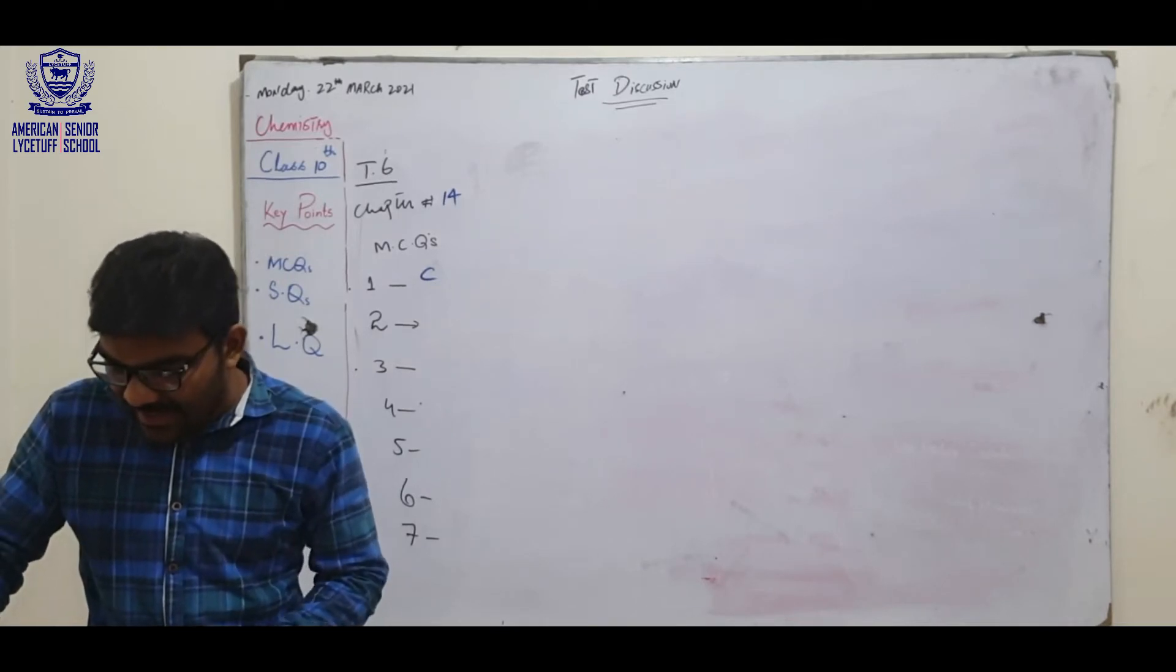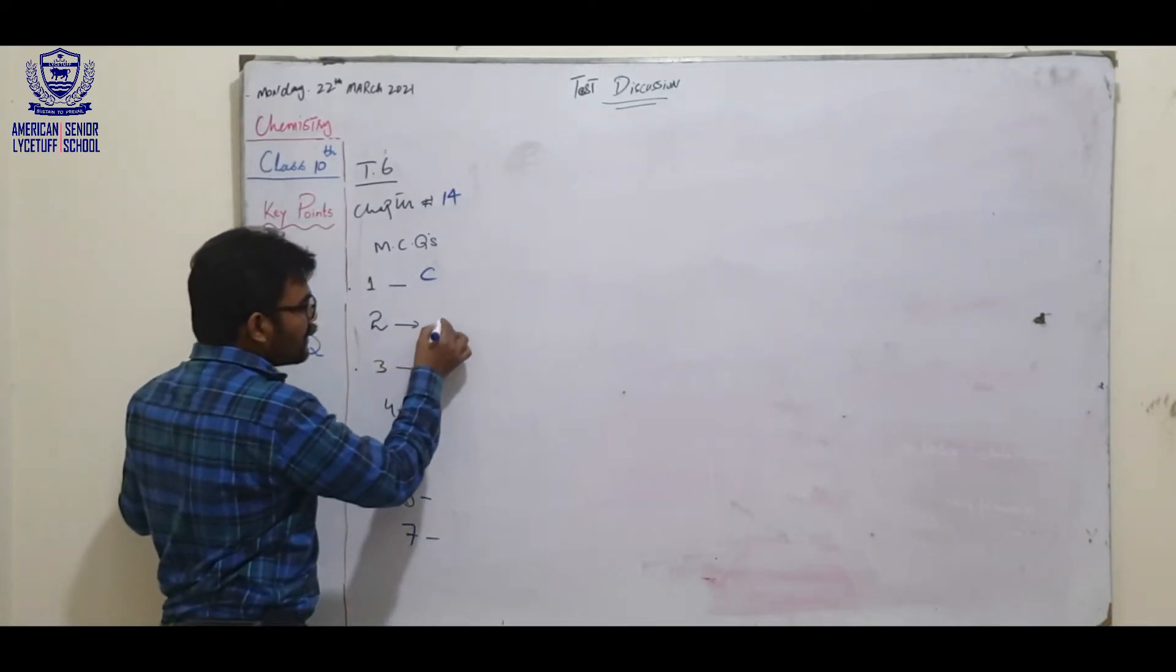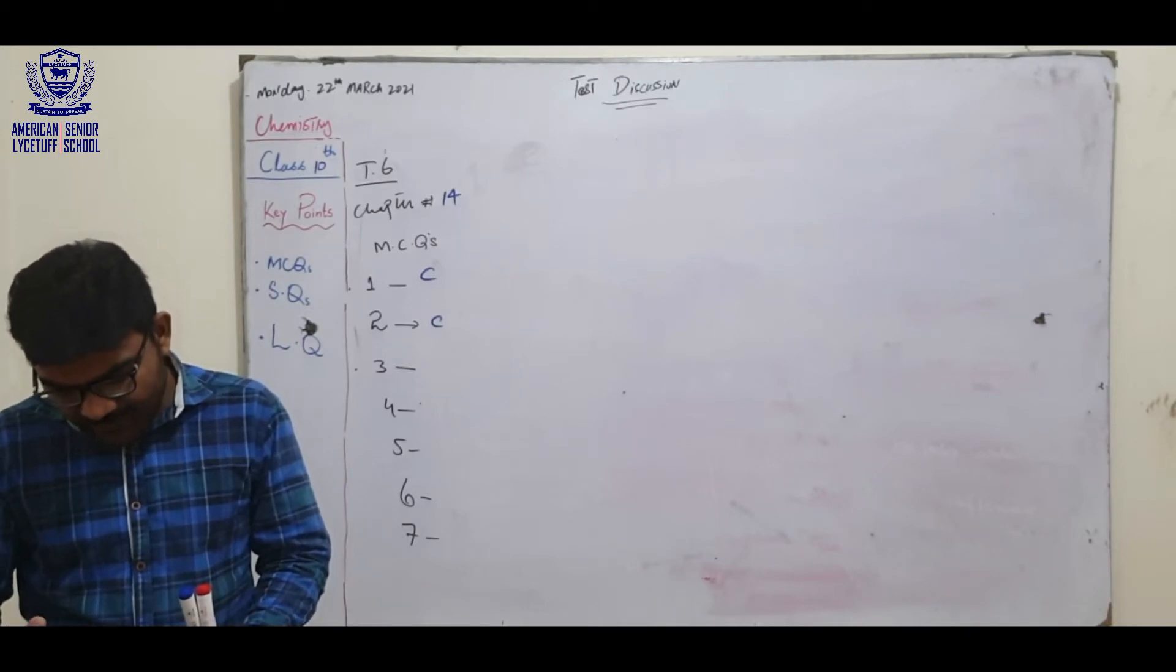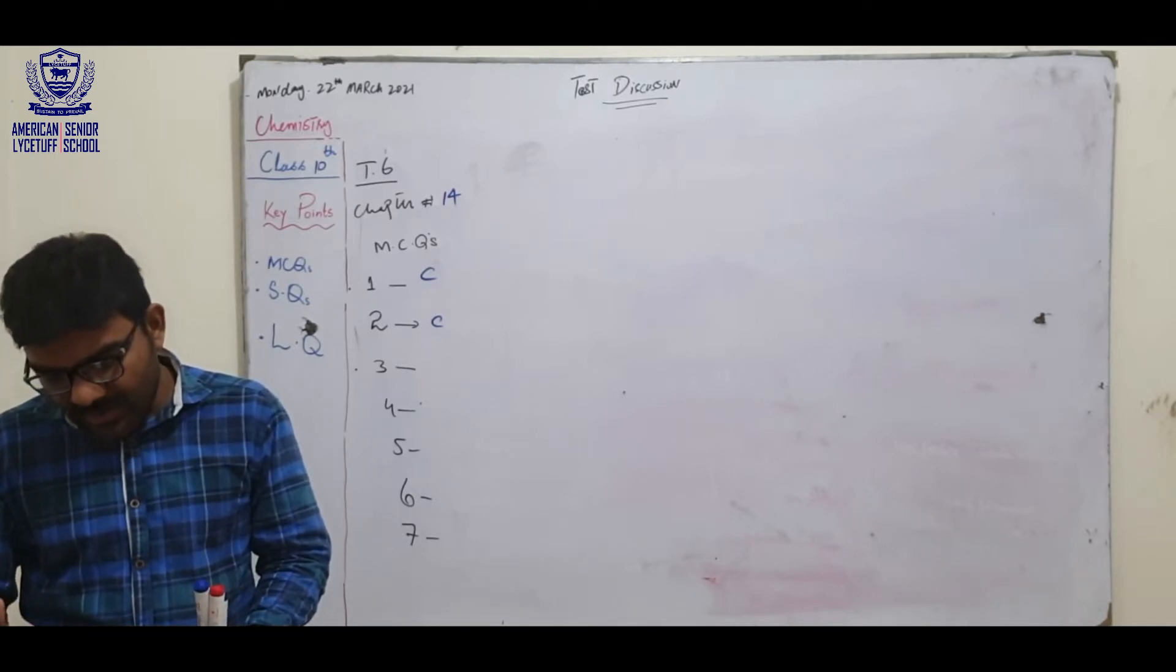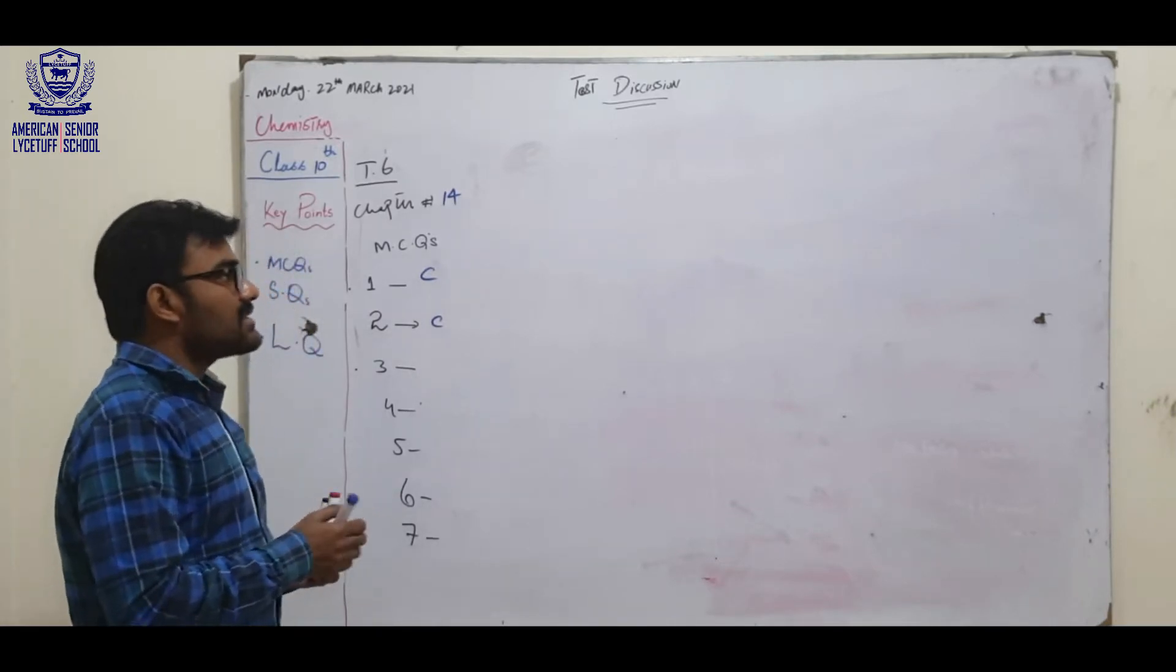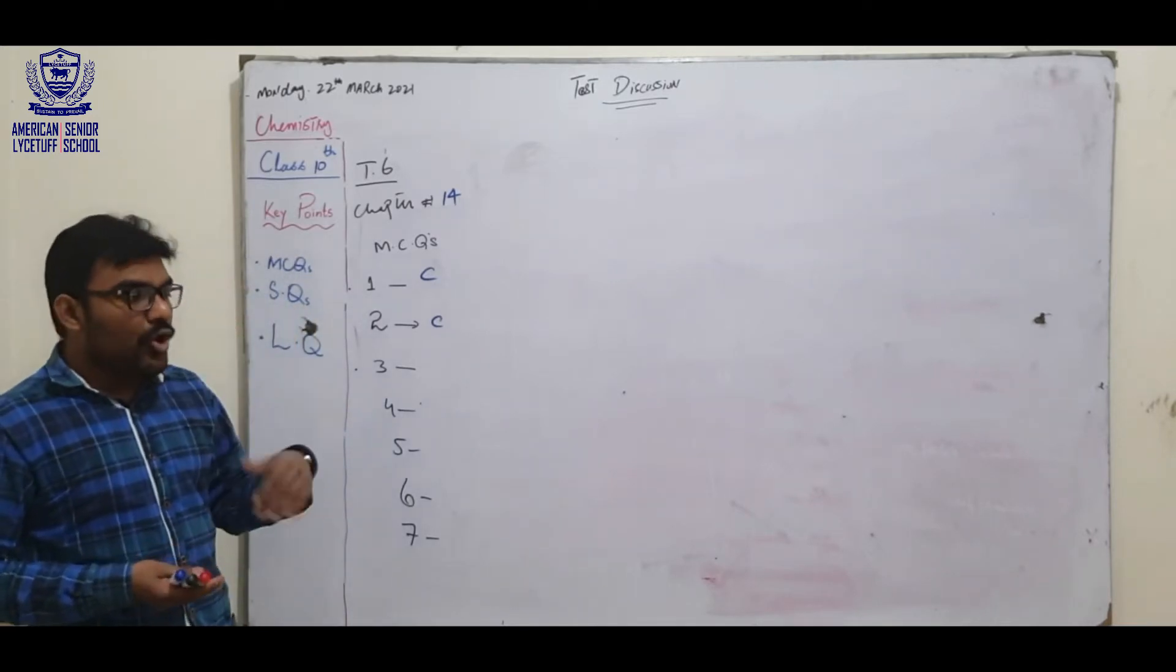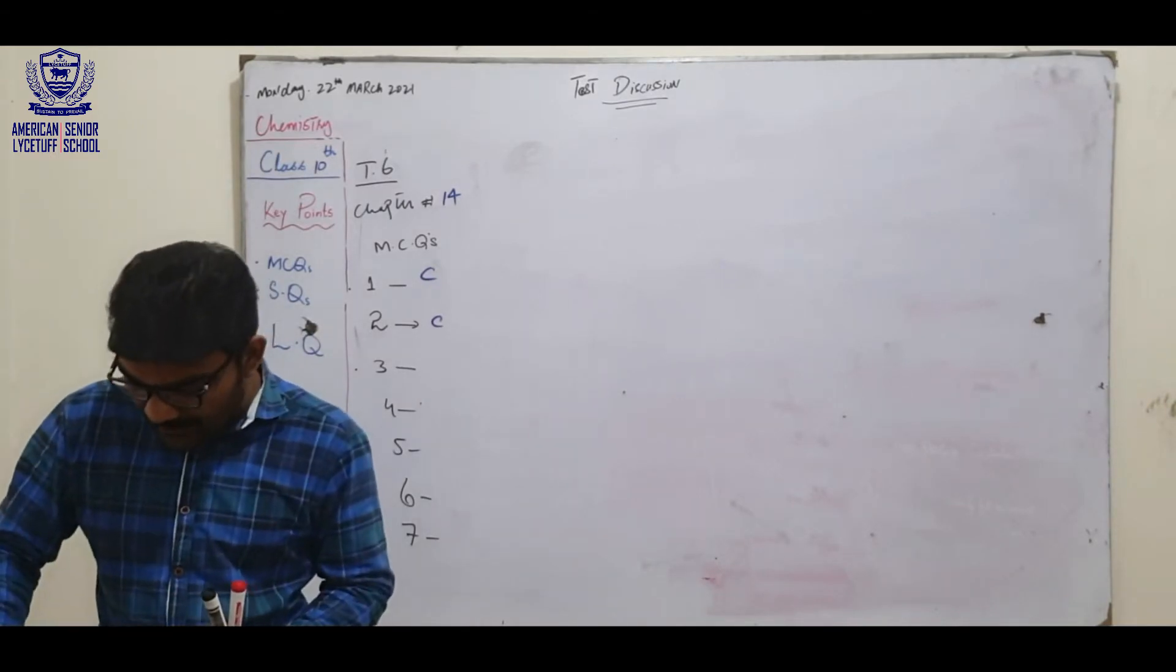Percentage of carbon in atmosphere. The option was 0.003. The answer was carbon dioxide concentration in environment. Next is temperature of the upper layer of stratosphere. As you know, stratosphere is the second layer of atmosphere.